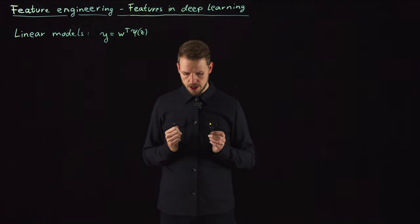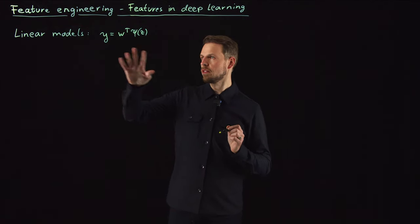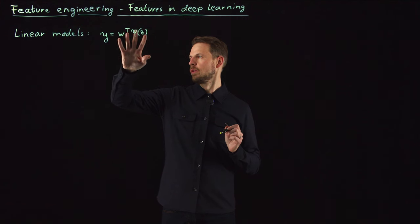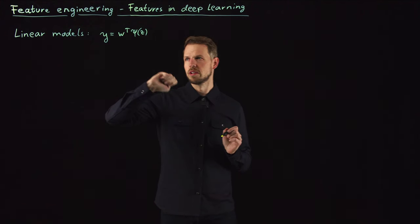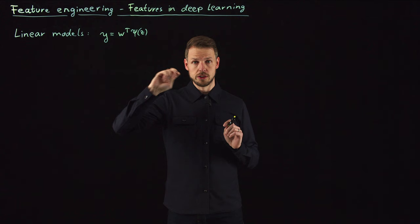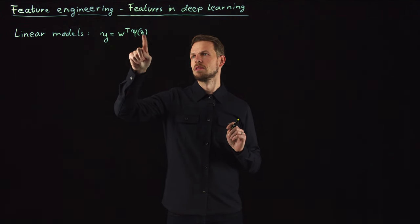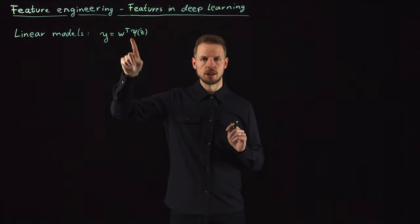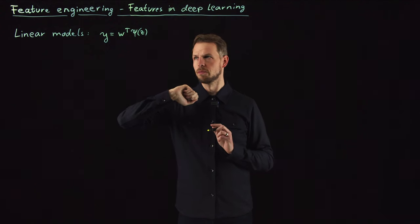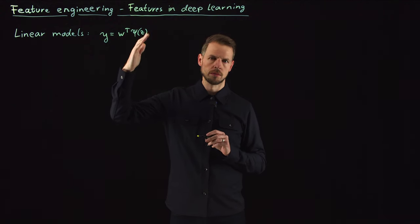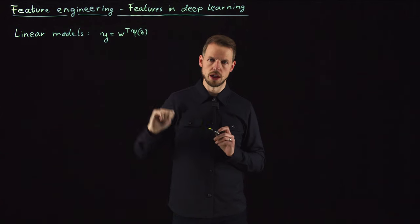This is the model that we have been using in many situations: we have a linear model in terms of our weights, which means we have weights times some feature representation of our input z. These could be the autoencoder, an SVD matrix, a dictionary, and so on.